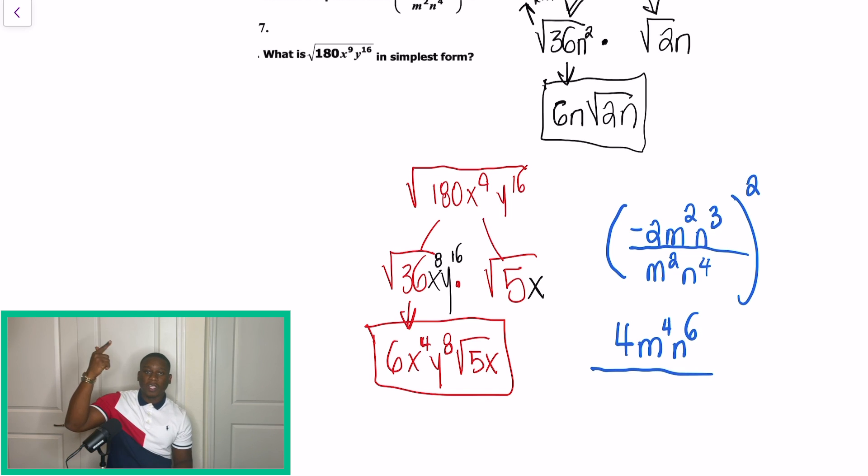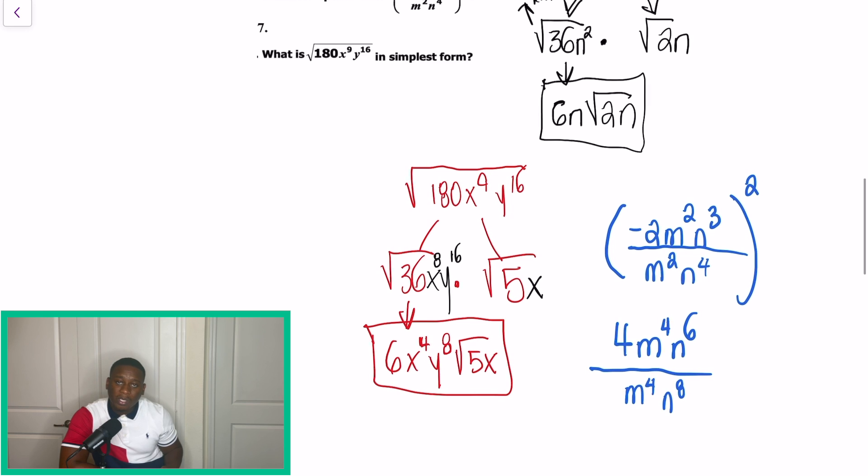We'll have negative 2 squared, which gives us 4. M to the 2nd power now turns to M to the 4th power. And then N to the 3rd power now changes into N to the 6th. So we took care of our numerator, that top part of the fraction. Now let's work on down to the bottom.